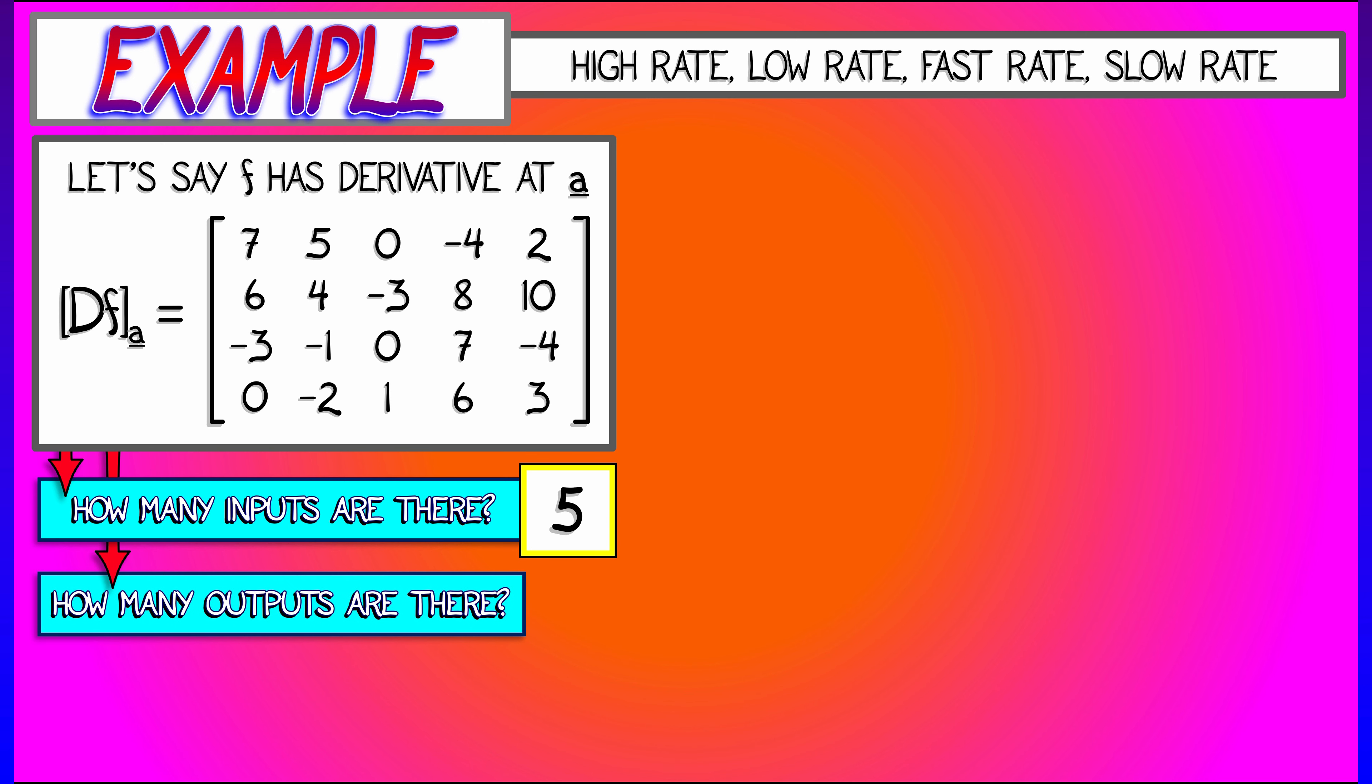If I ask you how many outputs there are, that's how many rows are in the derivative, that's four.